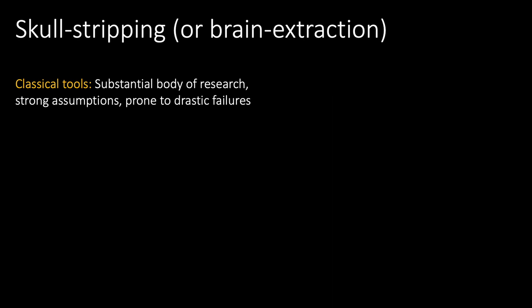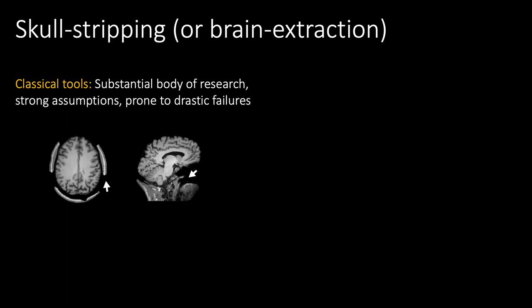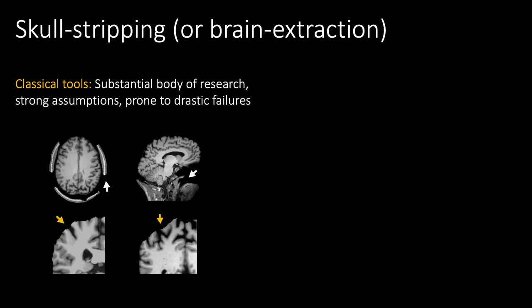Classical methods, which use a per-image optimization, often rely on strong assumptions about the input's intensity and spatial features, and they can sometimes fail substantially if caught in local minima, leaving large regions of non-brain tissue or, conversely, removing very important regions of cortex.